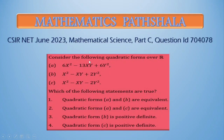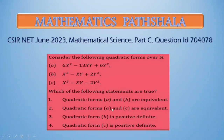Consider the following quadratic forms over the real number set. Here these 3 quadratic forms are given, then which of the following statements are true? The first statement is that quadratic forms A and B are equivalent, and the second is that quadratic forms A and C are equivalent.